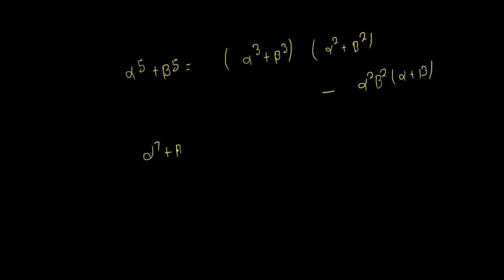I said you could be alpha to power 7 plus beta to power 7 to alpha to power 4 plus beta to power 4 and alpha cube plus beta cube minus alpha cube alpha plus beta cube alpha plus beta.